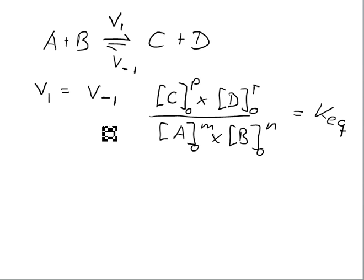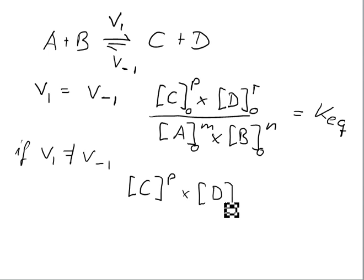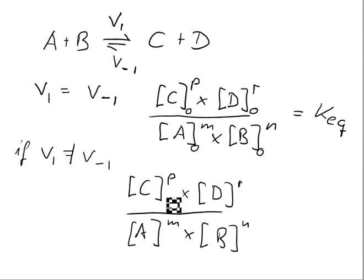What happens if we don't wait long enough? Then obviously we have more A and B than we should have compared to C and D. If V₁ is not the same as the reverse reaction, we have a different ratio: [C]^p times [D]^r over [A]^m times [B]^n. Sometimes people abbreviate that with t to indicate we have not reached equilibrium. This expression is abbreviated with the capital Greek delta and it's also called the mass action ratio.